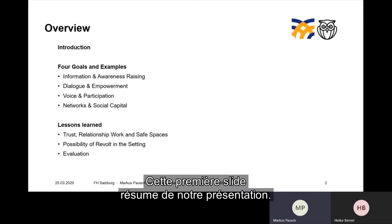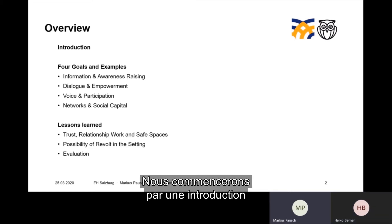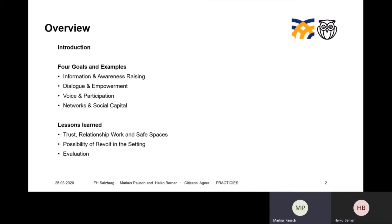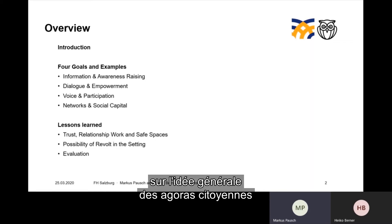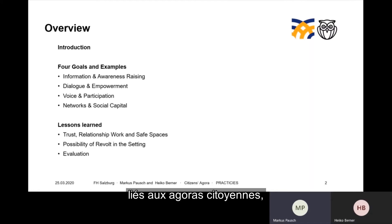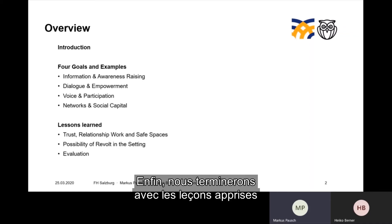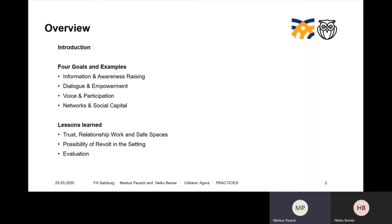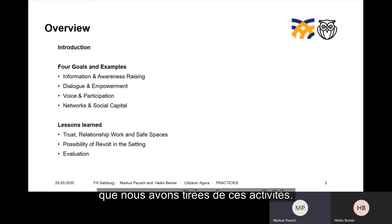Here on the first slide you can see an overview of what we are going to present. We start with an introduction to tell you something about the general idea of Citizens Agora. Then we will continue with the four goals that are related to Citizens Agora with concrete examples, and then we will finish with some lessons learned and recommendations that we drew out of these activities.